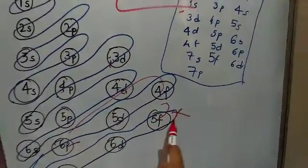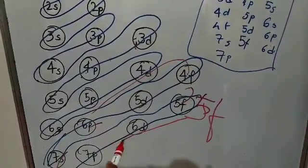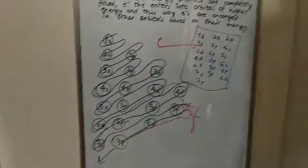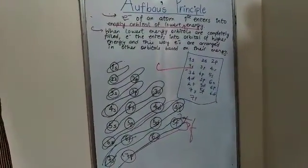sorry, 5f, 6d, 7p. So this is how the arrangement happens according to the Aufbau Principle.